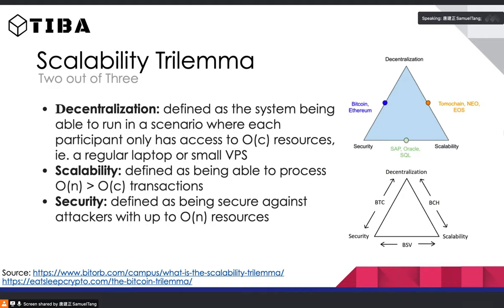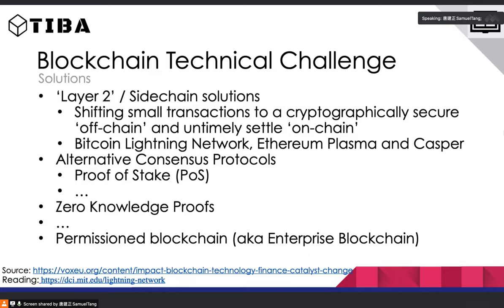Some potential solutions people have proposed: layer-two or sidechain solutions, shifting small transactions off-chain, settling them offline and putting results on the blockchain once settled. You could also use alternative consensus protocols like proof of stake, which don't consume as much energy. Interestingly, permissioned blockchain is actually one way to solve the scalability problem, even though it compromises decentralization.